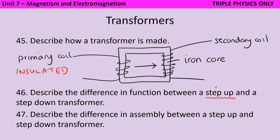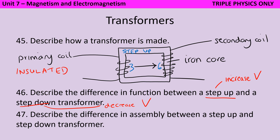A step up transformer is going to increase the potential difference of the power supply, whereas a step down transformer is going to decrease it. The way this is brought about is by looking at the number of coils. What's drawn here is a step up transformer — while there are three coils on the primary side, there are six on the secondary side, so in this instance this would double the potential difference of the power supply. If you wanted to make a step down transformer, this would have fewer secondary coils than primary coils.